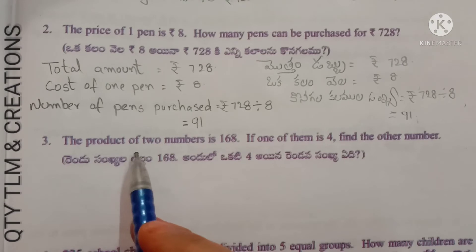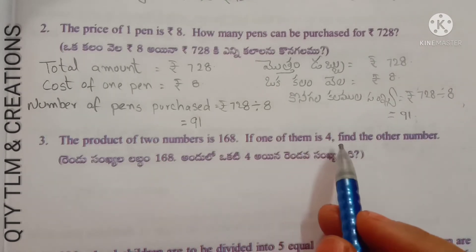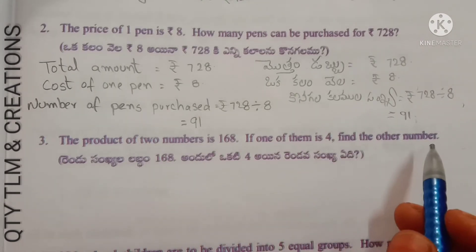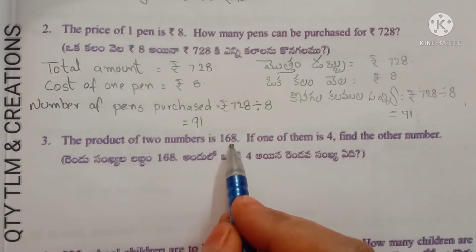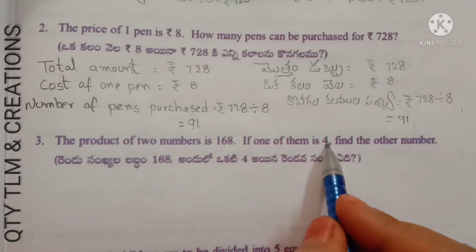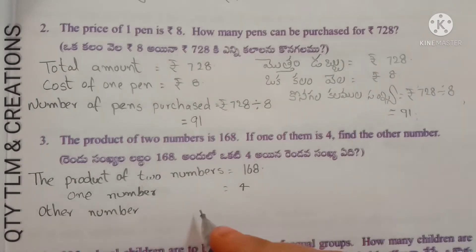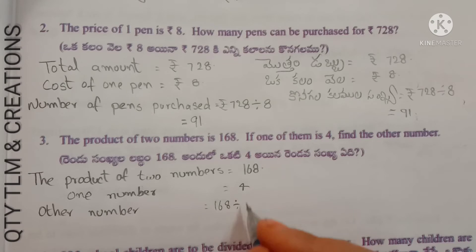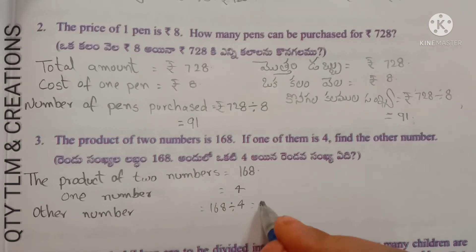Next question: the product of two numbers is 168; if one of them is 4, find the other number. Product = 168. One number = 4. Other number = 168 divided by 4 = 42. The other number is 42.